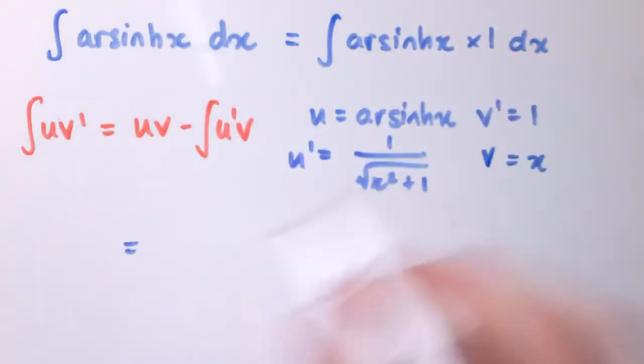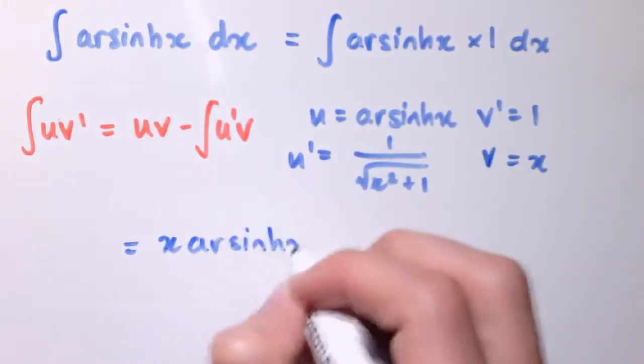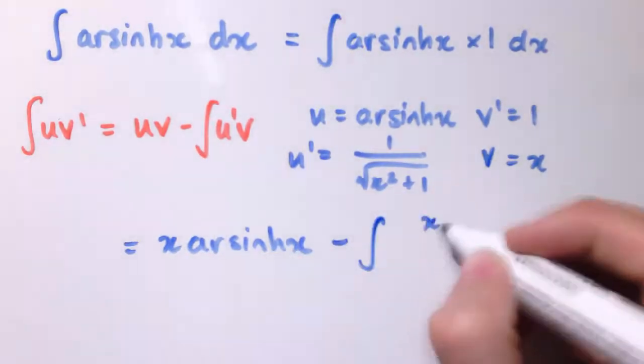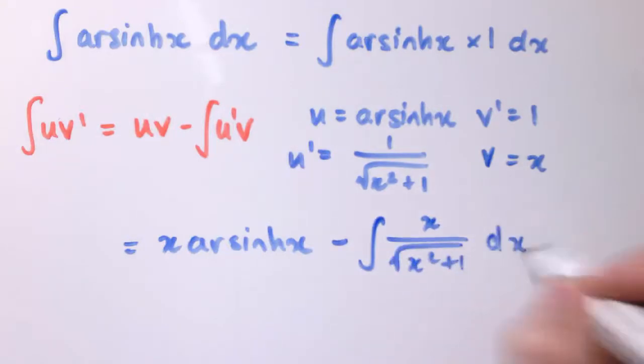Applying this formula then, I need u times v, so it's x times arcsinh of x, minus the integral of u' times v, which is x divided by the square root of x² + 1 dx.